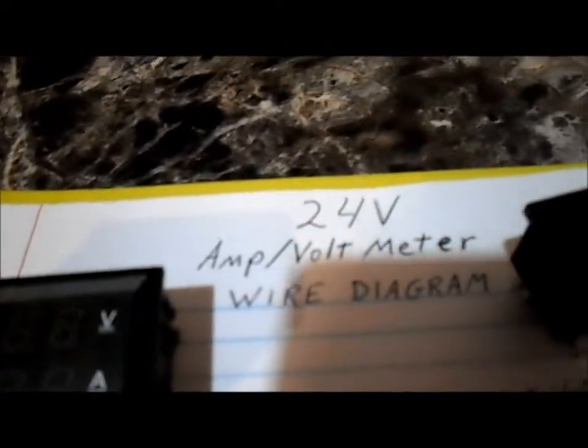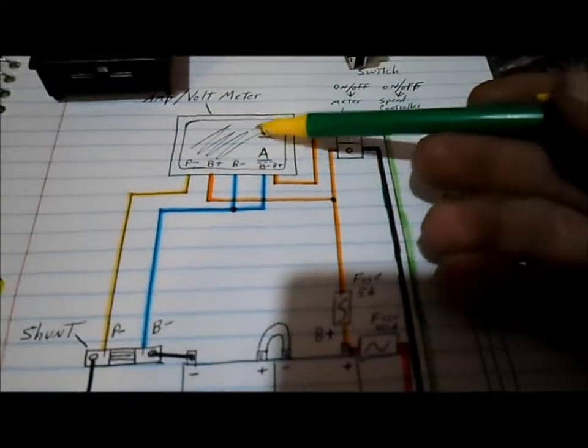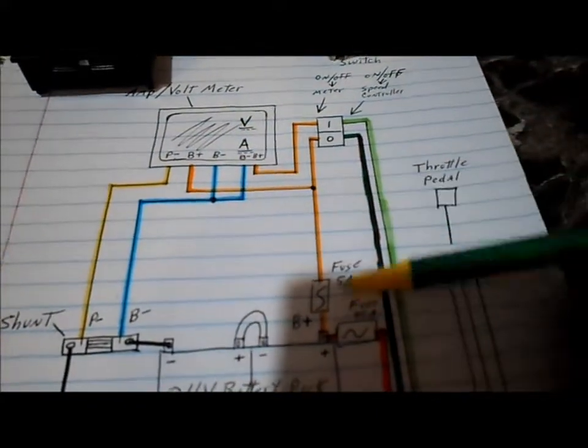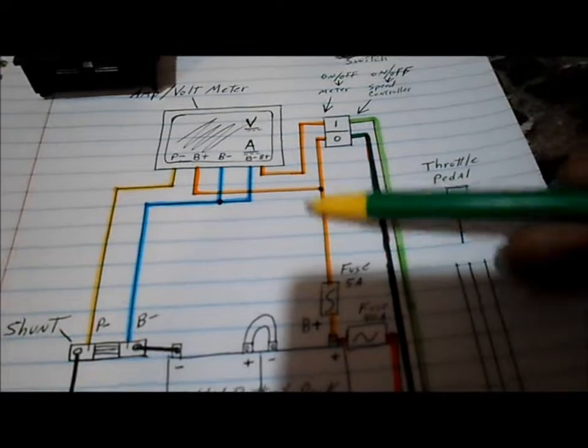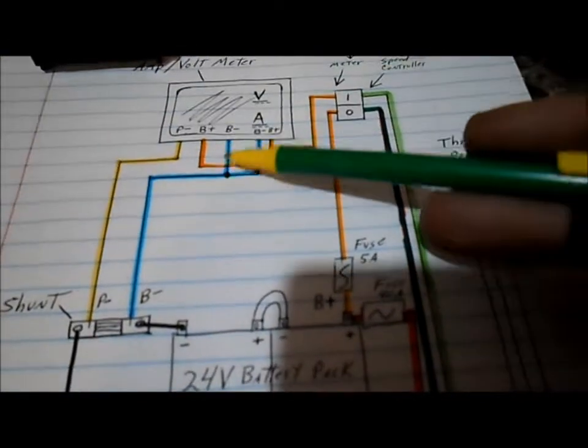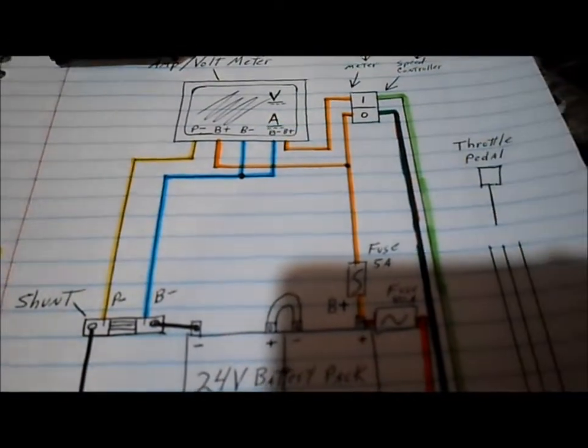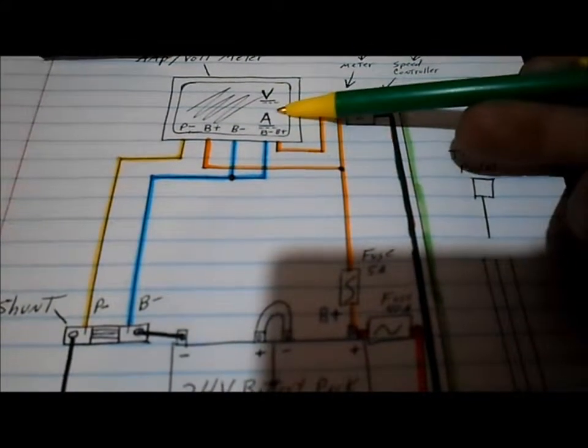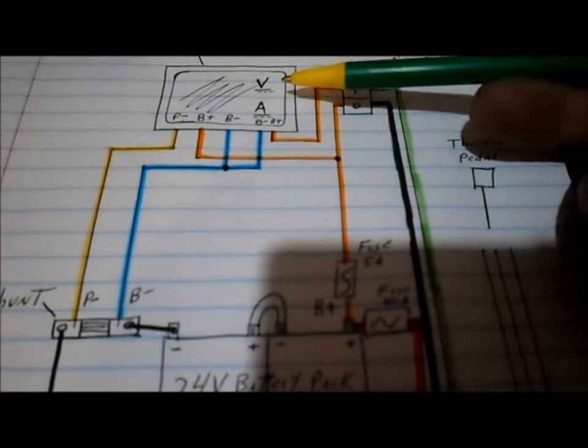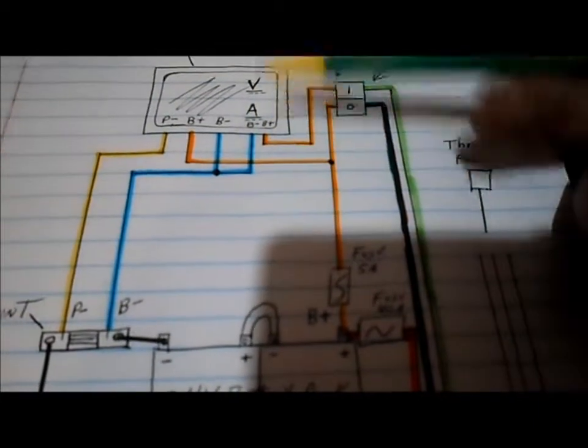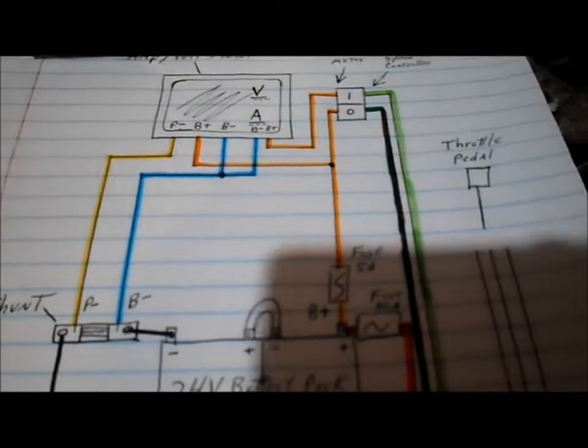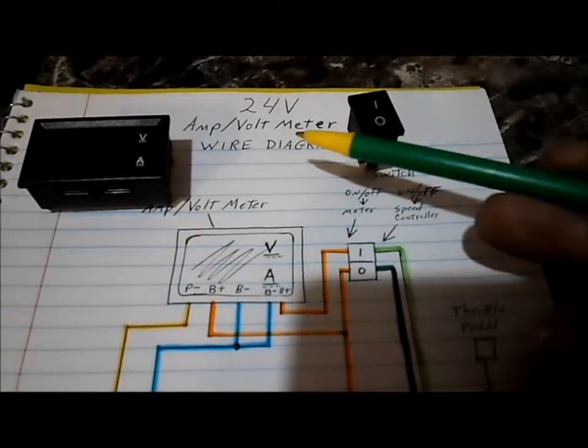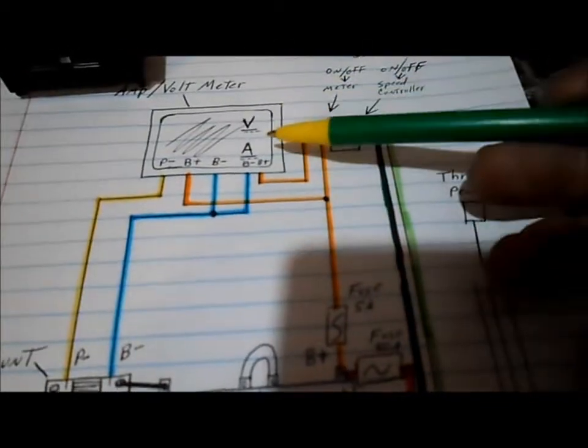And since this is a 24 volt system we're working with right now, we can power the meter up with the same power input for our B plus sensor input. Because the meter can run off of, if I remember right, from 5 volts up to 30 volts. So it can be quite a span it can be powered up by.